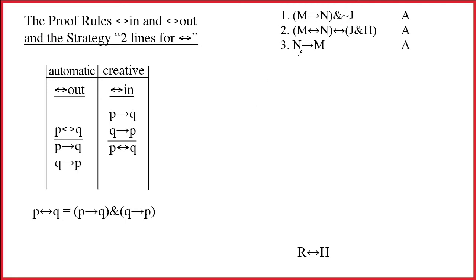Line 1 has an ampersand as its main connective. That's always good news. Let's break it up. We're going to get M arrow N on line 4, and we'll get tilde J on line 5.